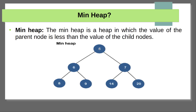The min heap means the root node has a lesser value compared to its children. For example, 5 is the root node with two children, 6 and 7, which are greater than the root node. Similarly, 6 is a parent node with two children, 8 and 9, which are higher than the parent node 6. All the elements are higher than the root node. This type of heap structure is called a minimum heap.